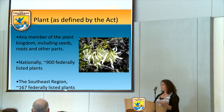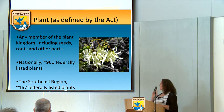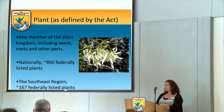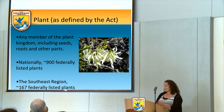In the act, we have a number of definitions. Plants under the act are defined as any member of the plant kingdom, including seeds, roots, and other parts of the plant. Nationally, we've got about 900 federally listed plants, and of those, about 167 are here in our region in the southeast.